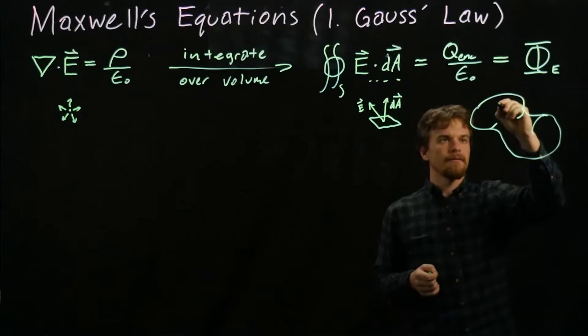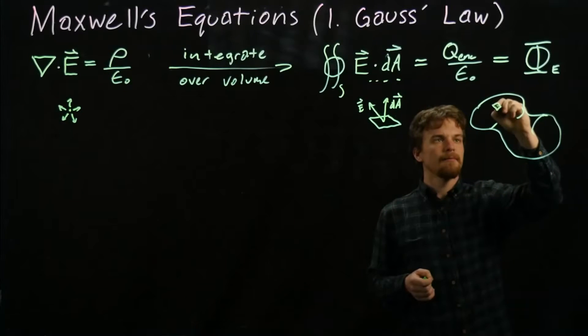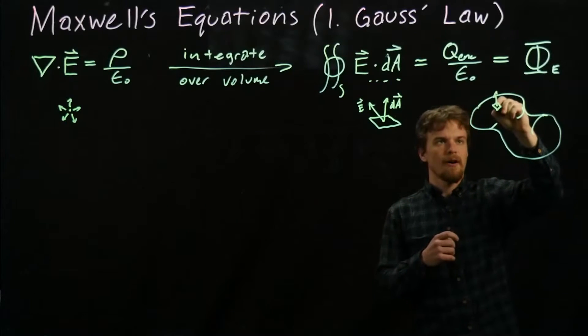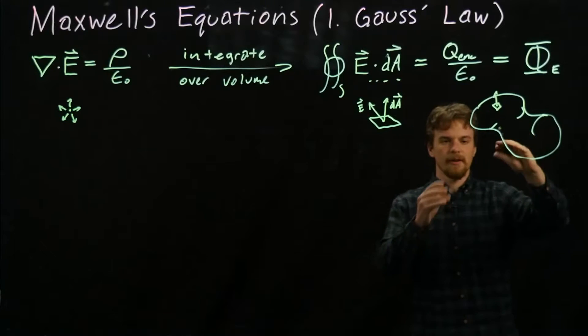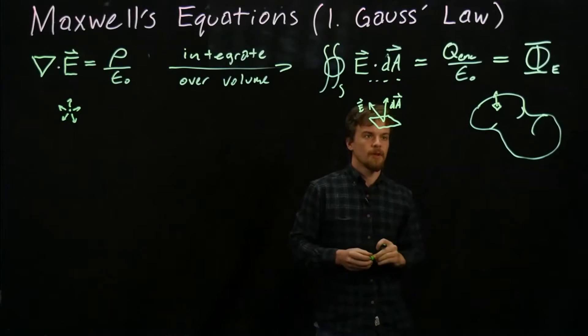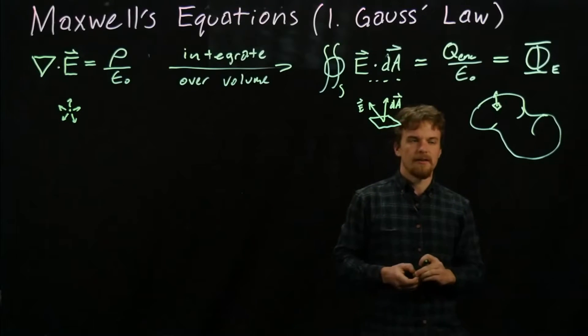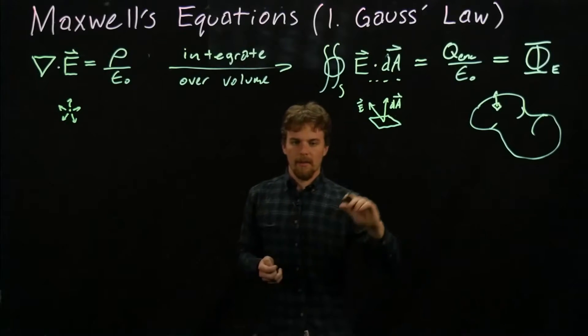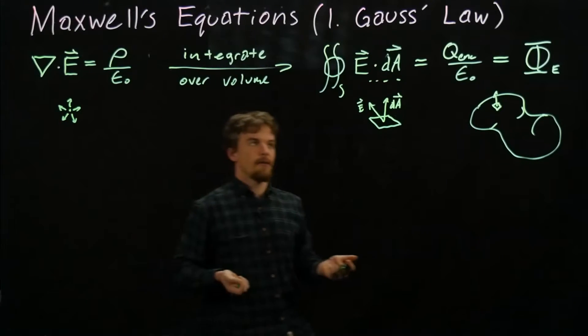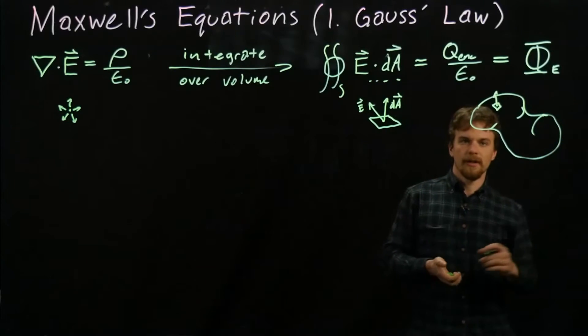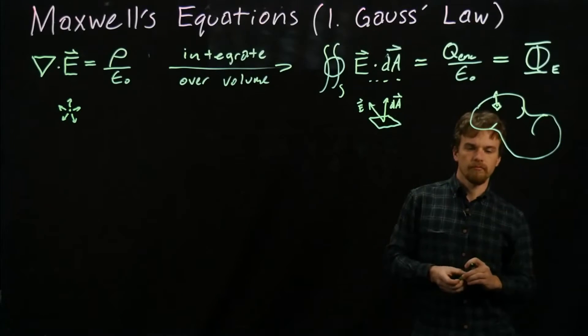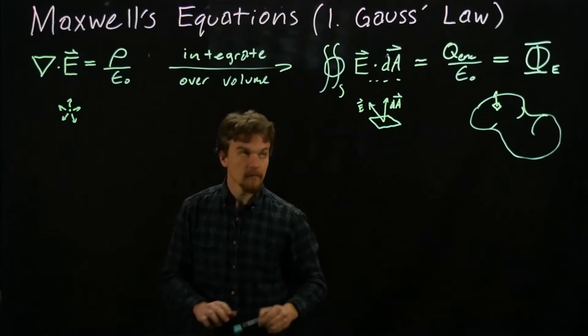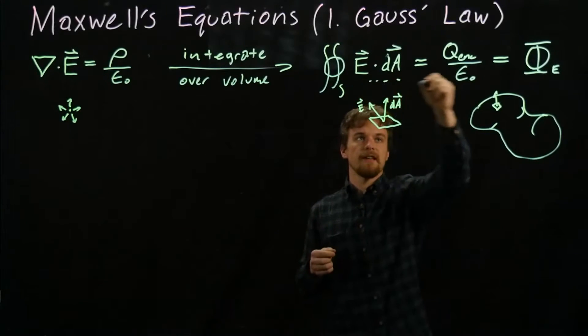That's how much of the electric field is moving out of this surface. We do our little differential area, have an electric field moving out, take all these little differential areas, dot them with the electric field, and sum them all up—that's what that integration is. This is the integral form of Gauss's law.